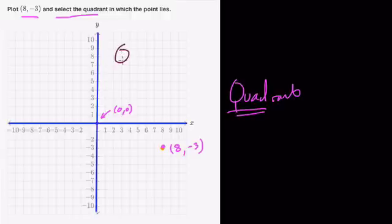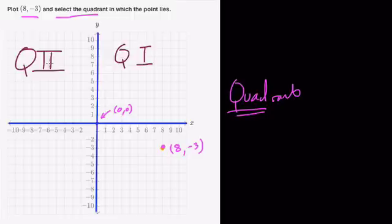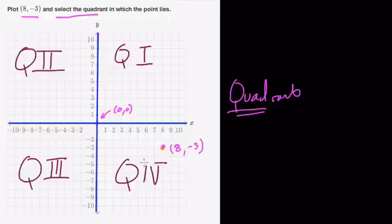So this is Q1, and they usually use the Roman numeral I for 1, and then Q2 for the second quadrant, and there's that Roman numeral for the number 2, Q3 for the third quadrant, and there's the symbol for 3 in Roman numerals, and Q4 for fourth quadrant, and this is the symbol in Roman numerals for the number 4.